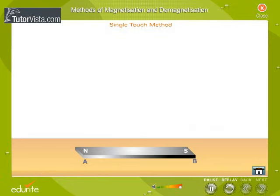The upper side of the soft iron gets magnetized. Now turn the soft iron bar as shown here and magnetize the lower side in the same manner.